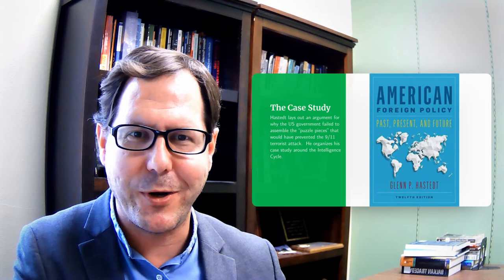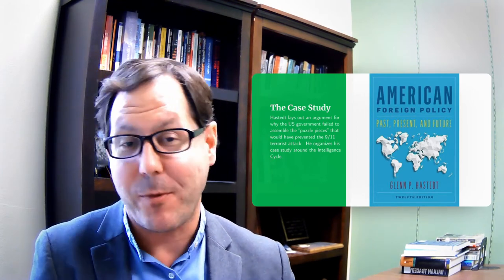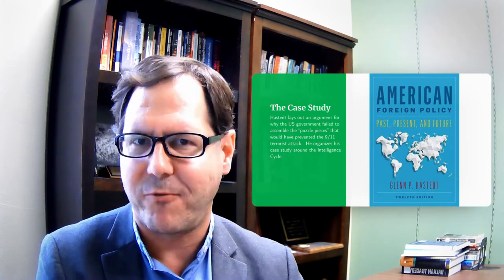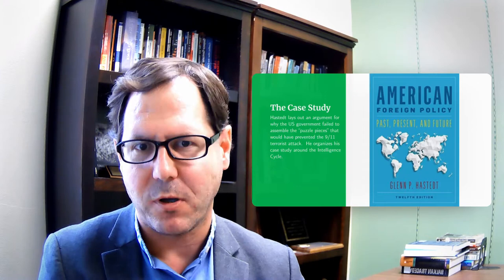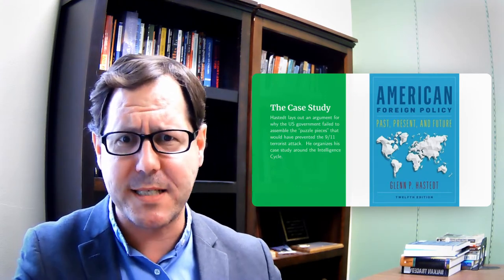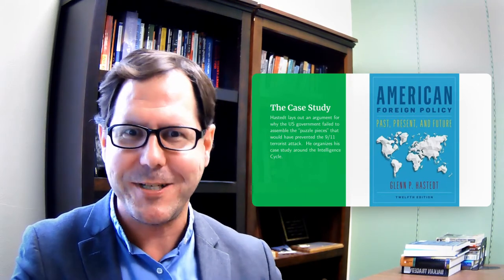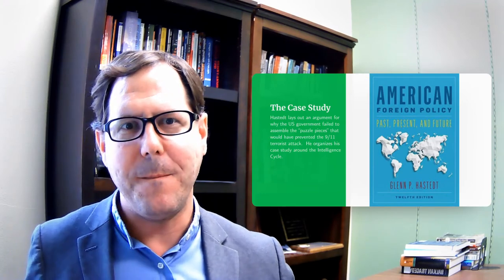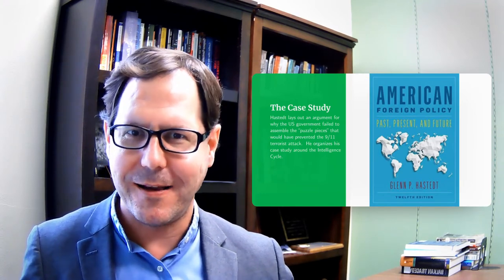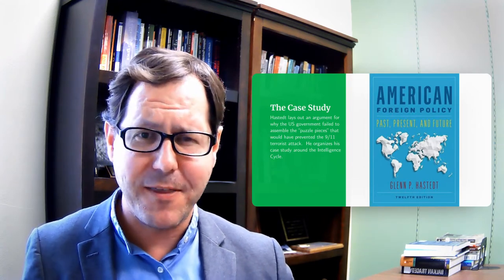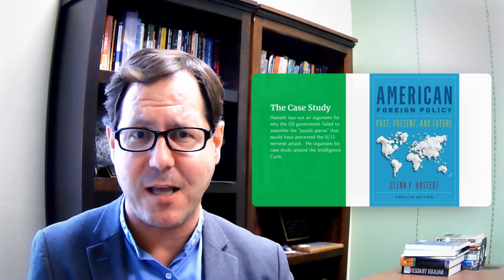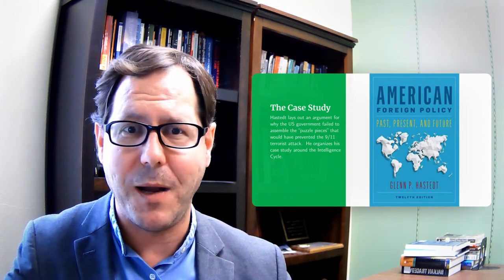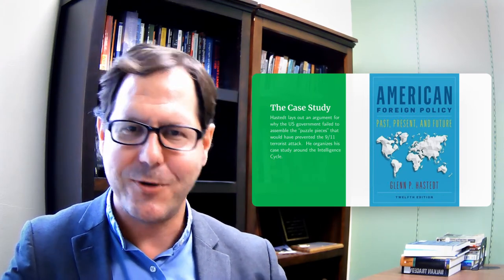Hastedt has spent his career studying the intelligence community and the process of intelligence analysis, and features very prominently in a couple versions of his book a case study about what went wrong in terms of the U.S. government's ability to put the puzzle pieces together for September 11th, 2001 to prevent a terrorist attack. He organizes that around the intelligence cycle, which makes for a really nice way to introduce it — and also to see some of the different ways the intelligence community in practice can work at cross purposes, where you can see breakdowns that you wouldn't recognize just talking about the abstract intelligence cycle, which looks neat and clean and tidy.